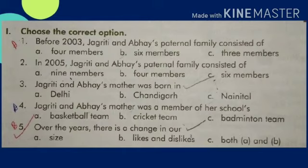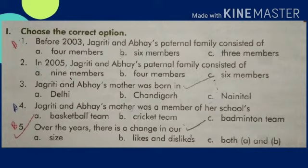First, before 2003, Jagrati and Abhay's paternal family consisted of — correct answer B, six members. Second, in 2005, Jagrati and Abhay's paternal family consisted of — A, nine members. Third, Jagrati and Abhay's mother was born in — C, Nainital. Fourth, Jagrati and Abhay's mother was a member of her school's — A, basketball team.